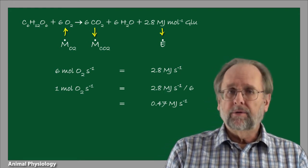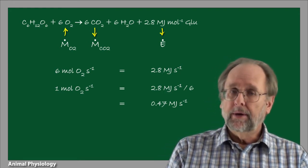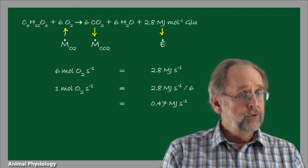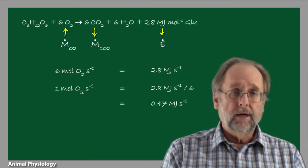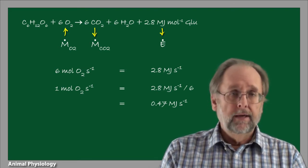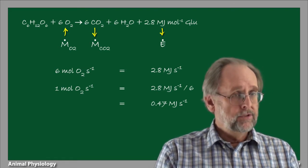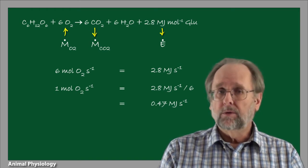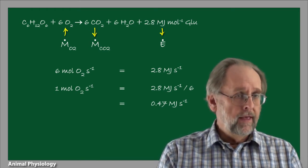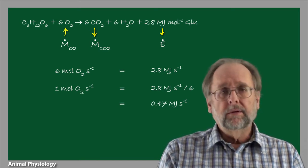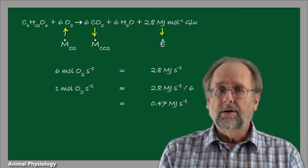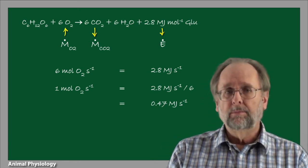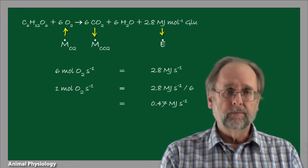We can make a similar argument for measuring metabolic rate by measuring the carbon dioxide production rate. That has some interesting complications, which we'll come back to later, but for now let's stick to oxygen consumption rate as a proxy for metabolic rate.